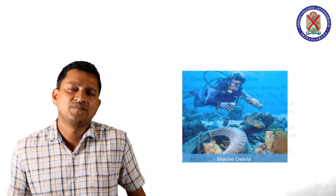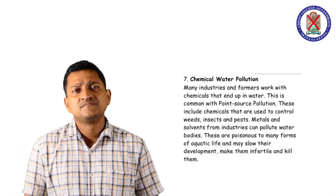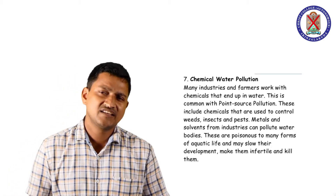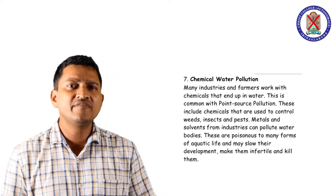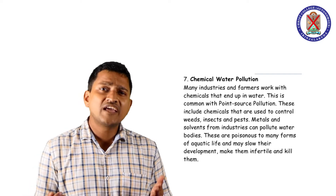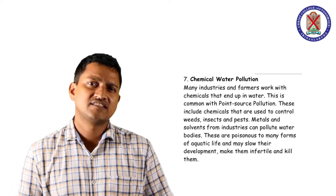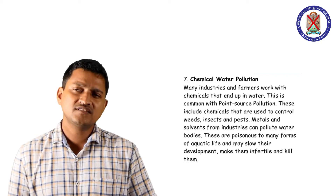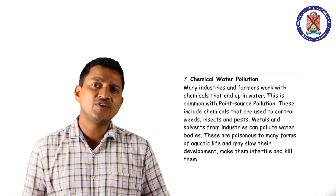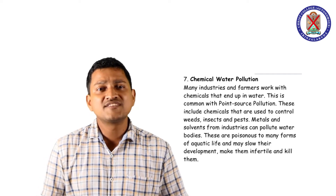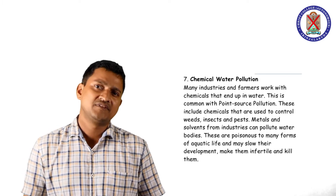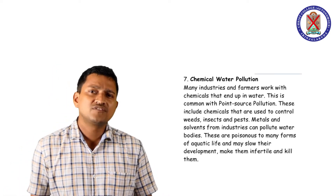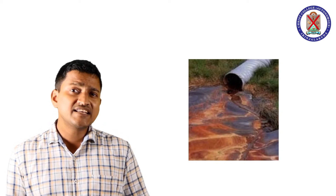The next type is chemical water pollution. Many industries and farmers work with chemicals that end up in water. Agricultural practices including usage of fertilizers contribute to this type of pollution. This includes chemicals used to control weeds, insects and pests. Metals and solvents from industries can pollute water bodies and are poisonous to many forms of aquatic life, slowing their development, making them infertile or killing them. Different chemicals can also change the color of water.